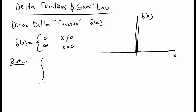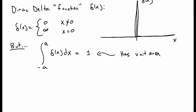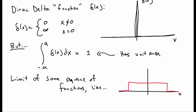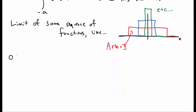Despite this singular nature, nonetheless, the integral of the delta function — the area underneath the delta function — is equal to 1. So the delta function has unit area, despite it being an infinite spike. One way to think of this is that the delta function is really the limit of some sequence of functions. Imagine you consider a sequence of functions that look like boxes — fairly wide, not very tall, with area 1. Now imagine shrinking the box and making it higher and higher to keep the area equal to 1, until you have a spike at only x equal to 0. That's what we mean by the delta function.